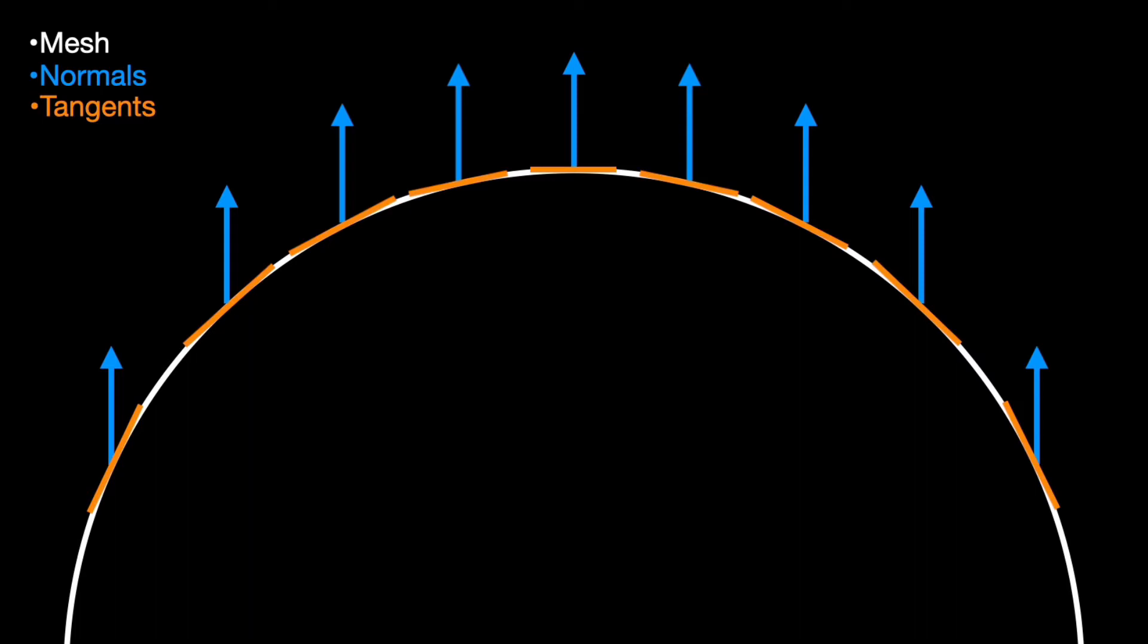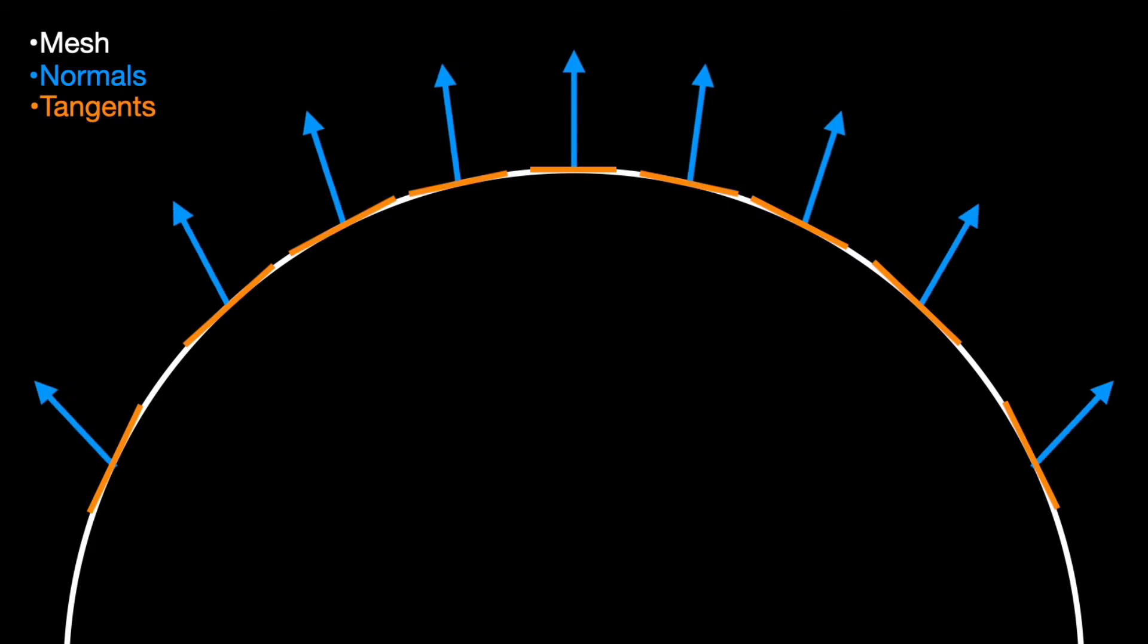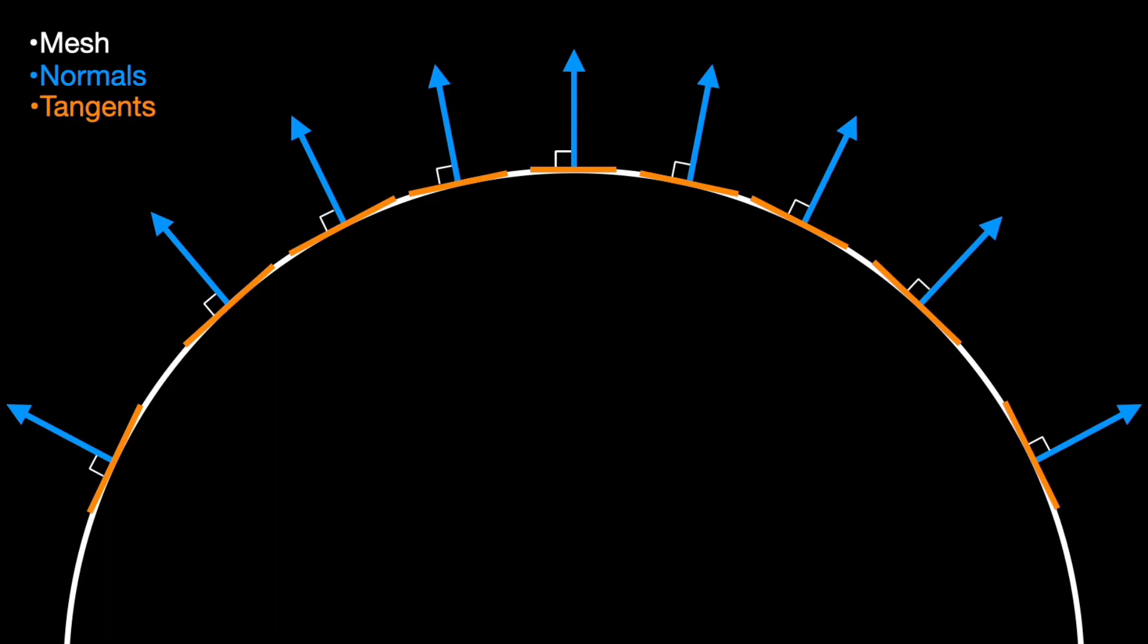And so if we were to correct our normal vectors, our blue arrows, they would look more like this. And now they're 90 degrees perpendicular to the tangent because that's what they are. And they're also perpendicular to the bi-tangent, but we'll get into that in just a second. But as you can see, they are perpendicular to this tangent, giving us our normal vectors.